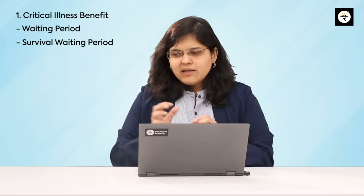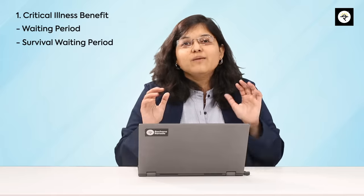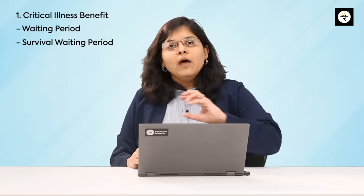The second point is the survival period criteria. Many insurance companies will have a list of diseases covered as critical illnesses. If a person gets a critical illness, certain insurers will pay immediately, but certain insurers may say they want the person to survive for another 10 to 15 days before doing the payout. As a person analyzing these riders, the thumb rule is: lower the survival waiting period, the better.